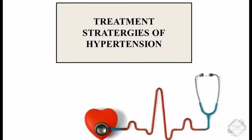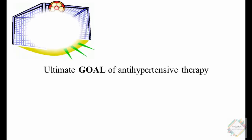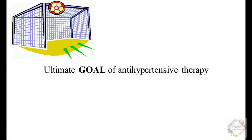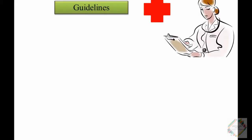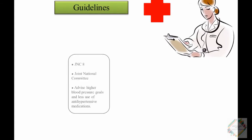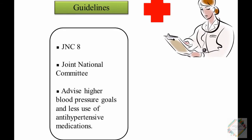Today we will be talking about the treatment strategies of hypertension. The main ultimate goal of antihypertensive therapy is to reduce the cardiovascular and renal morbidity and mortality. The Joint National Committee put forward the JNC-8 guidelines, which advises higher blood pressure goals and less use of antihypertensive medications.